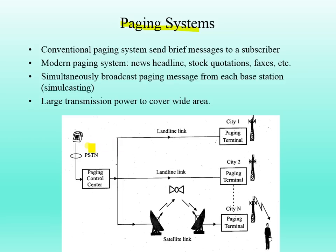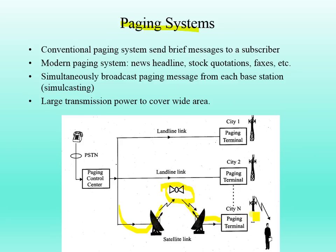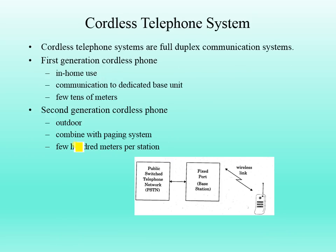Below is the block diagram of how a paging system works. There is the PSTN (Public Switched Telephone Network), the telephone, and the paging control center. You give a message at the control center and it routes to the specified paging terminal. If the subscriber is in the local area, they receive the message; if elsewhere, the signal travels via satellite to areas where the wire network is not connected, checks whether the subscriber is in that area, and delivers the message.